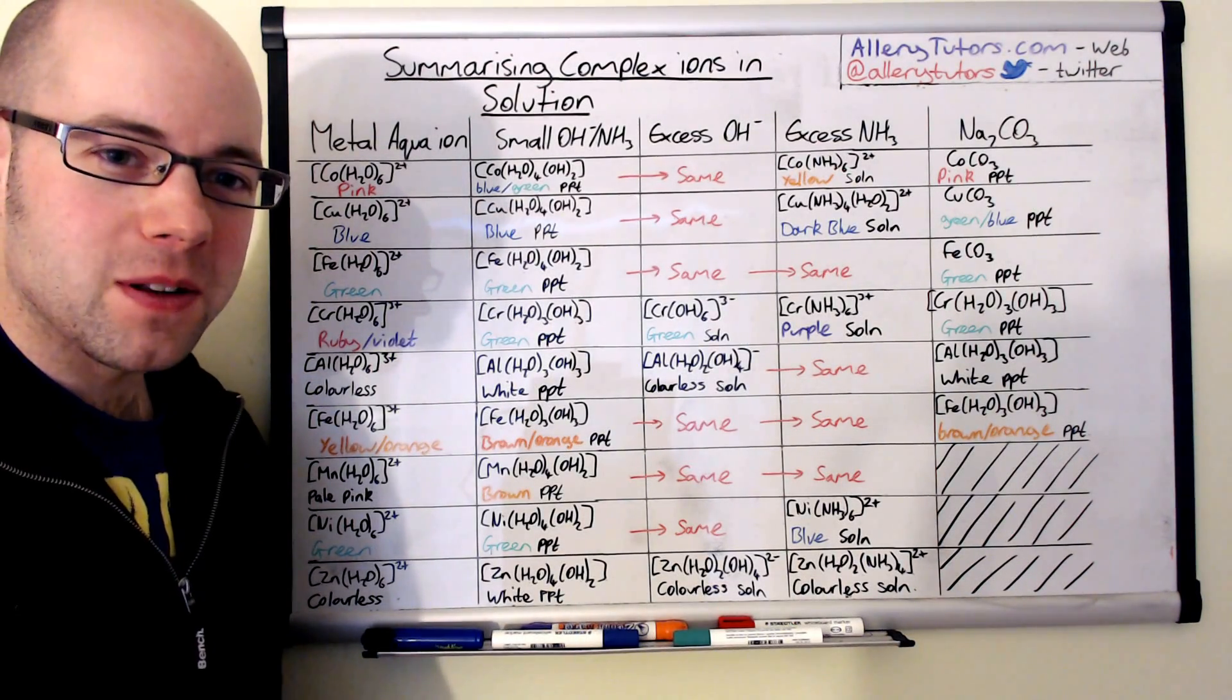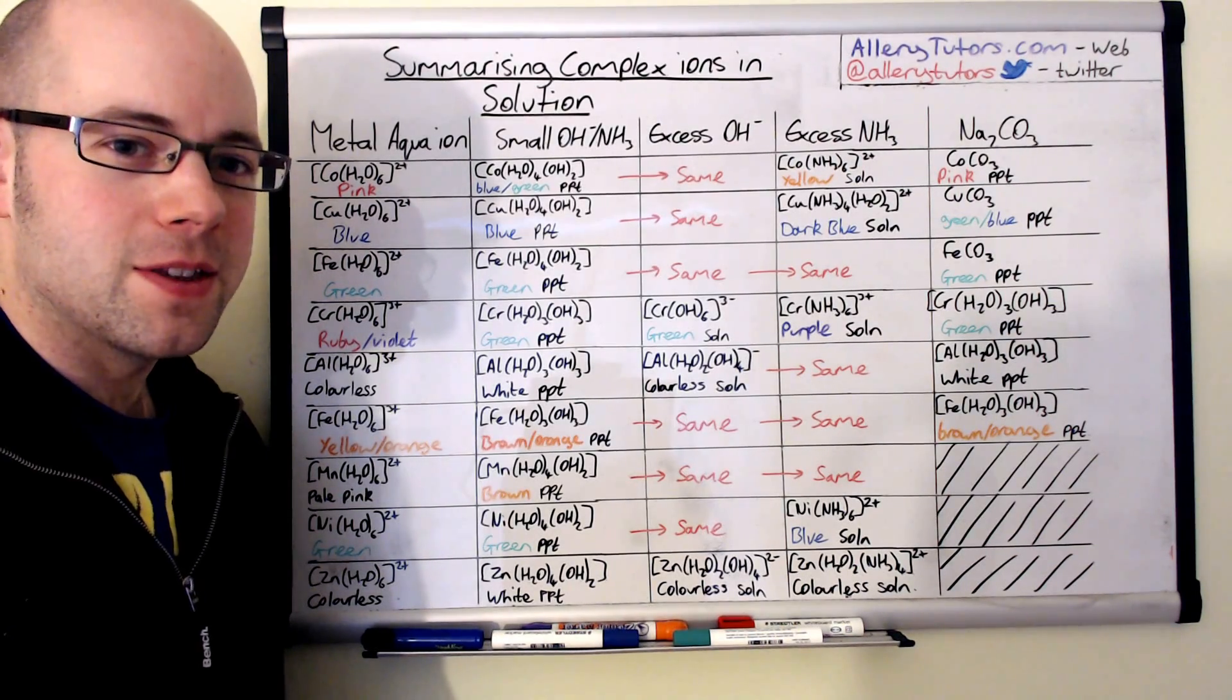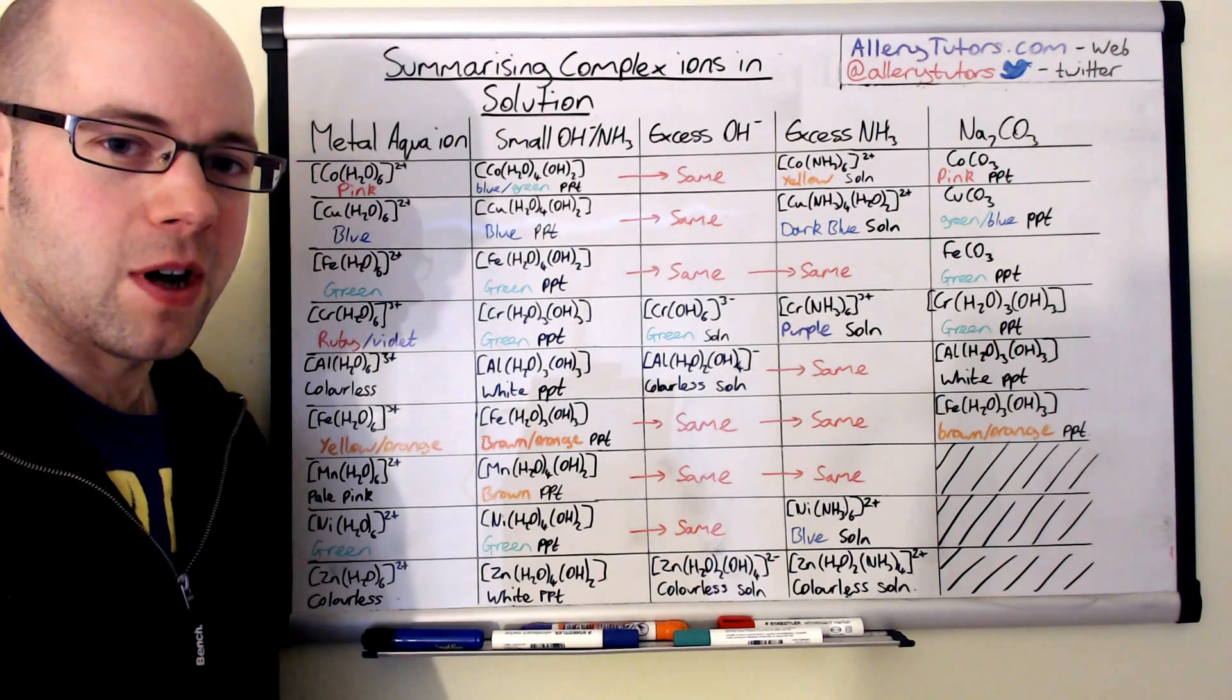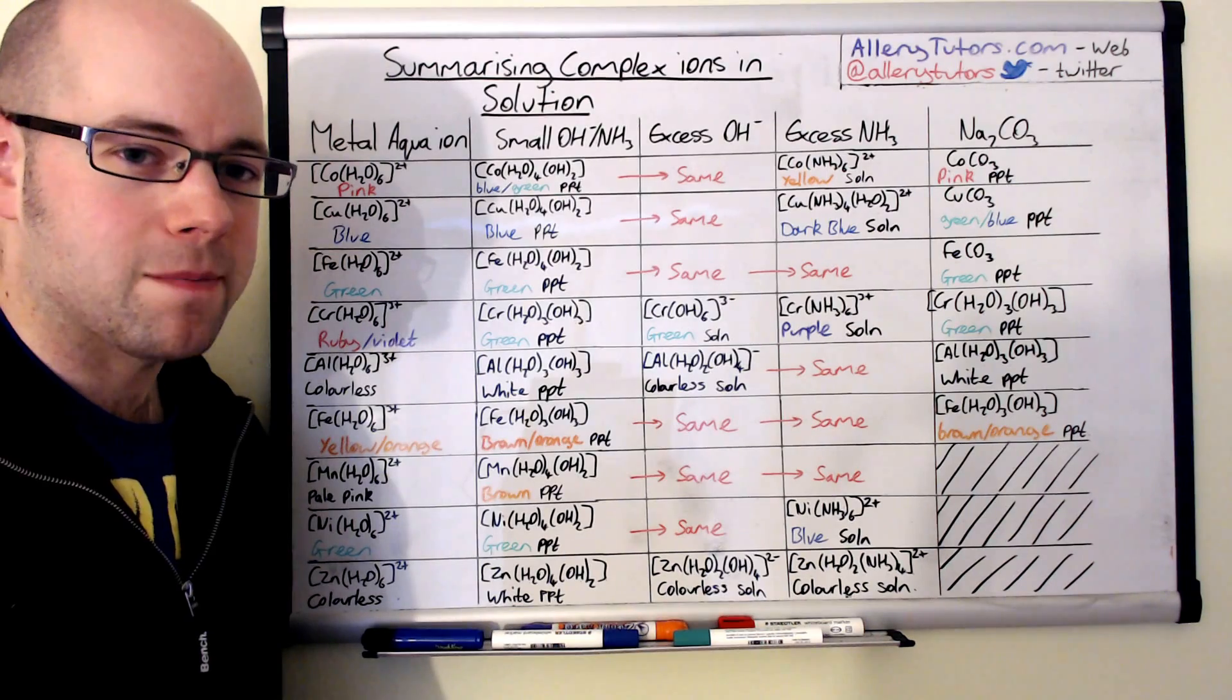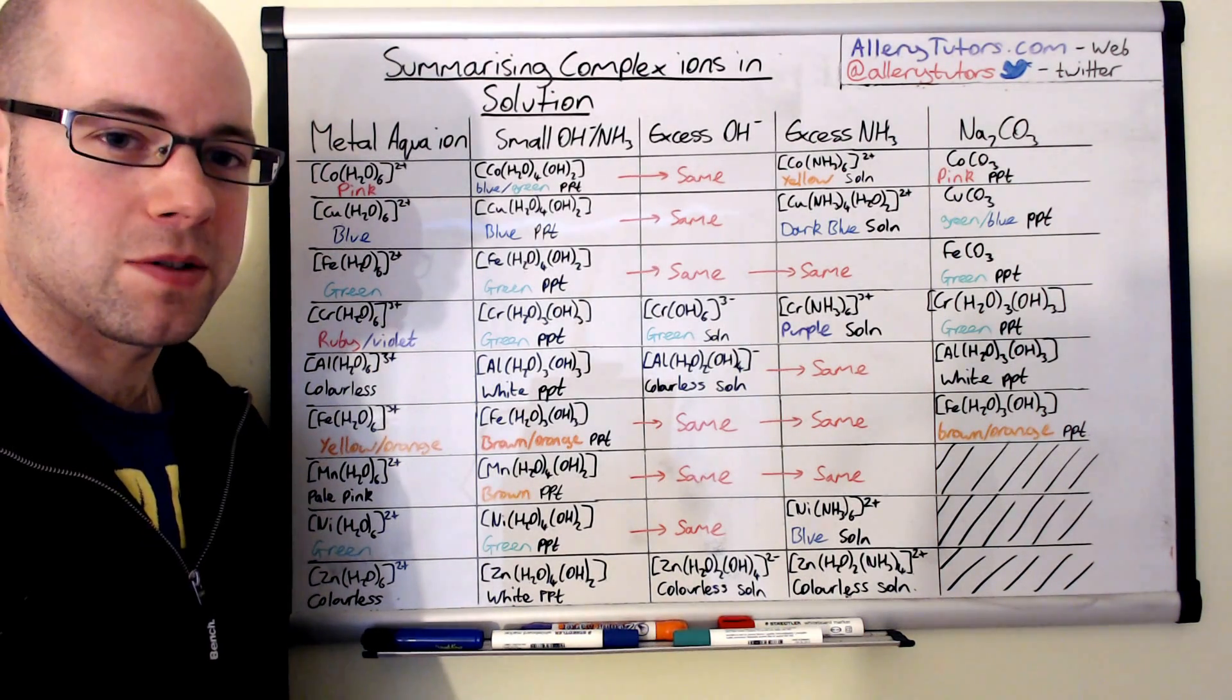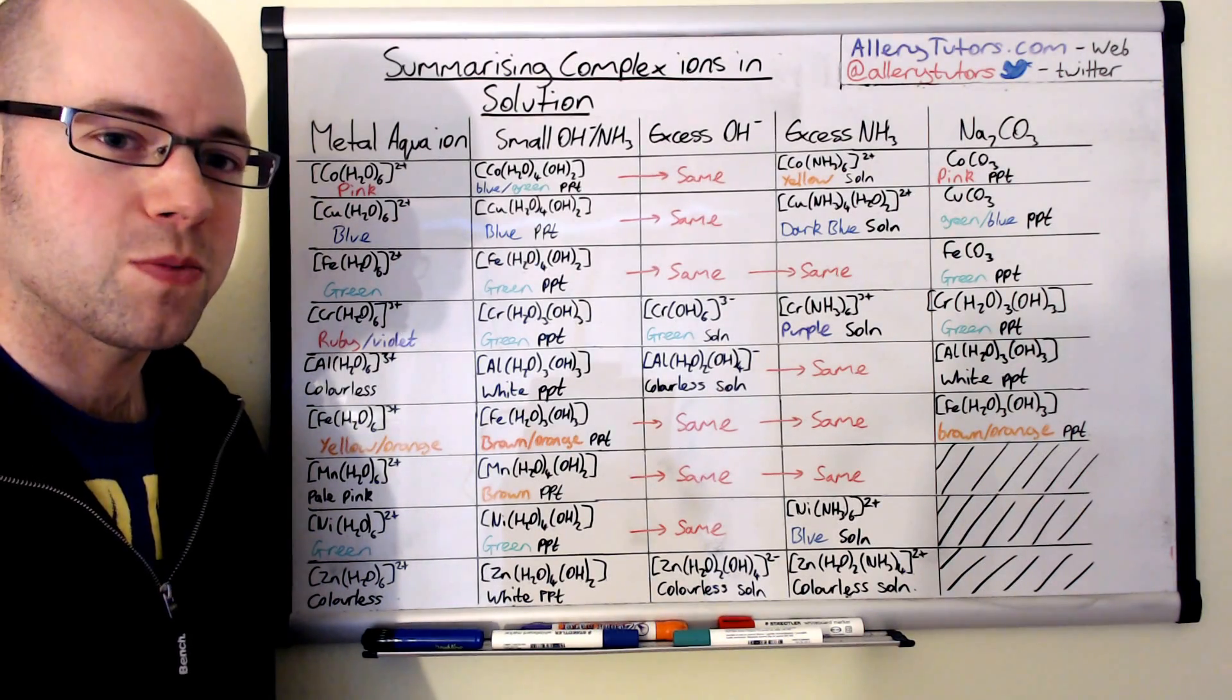I'm from AluminiumTutors.com and welcome to the video on summarising complex ions in solution. In this video we're going to go through about nine different types of metal aqua ions, their shapes and their colours, and we're going to look at what happens when we add small amounts of hydroxide and ammonia and excess amounts of hydroxide and ammonia, and also with carbonate compounds as well.